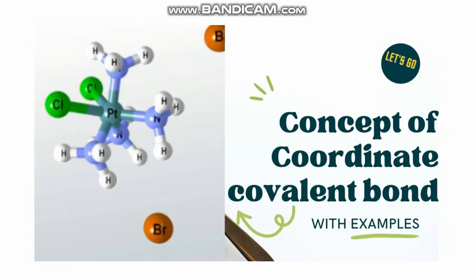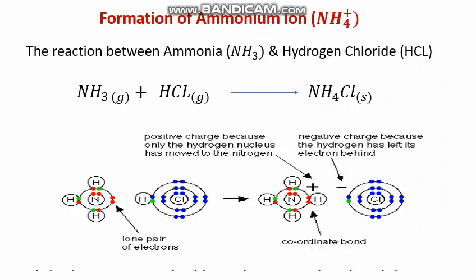Hello everyone, hope you all are doing great. In this video I am going to explain the concept of coordinate covalent bond. Let us consider the formation of ammonium ion. When there is a reaction between two colorless gases — ammonia and hydrogen chloride — a thick white smoke of solid is formed, that is ammonium chloride.